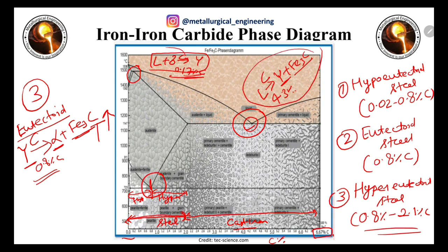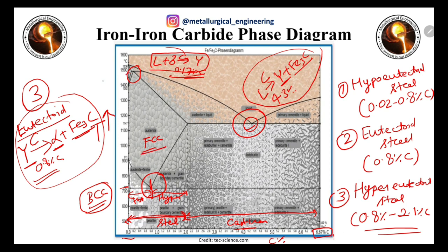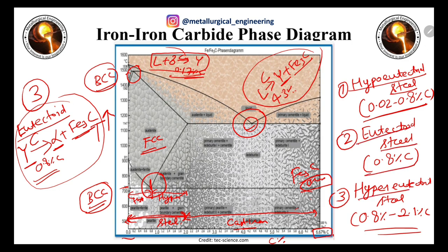Some important phases to remember: alpha ferrite has a BCC crystal structure; austenite has an FCC crystal structure; delta ferrite has a BCC structure at high temperature; and cementite (Fe₃C) has an orthorhombic crystal structure. Steel ranges from 0 to 2.1% carbon and is categorized into hypo-eutectoid, eutectoid, and hyper-eutectoid steel.